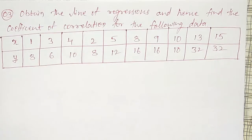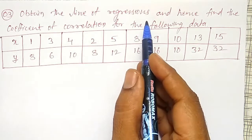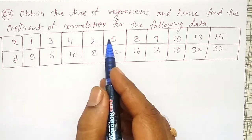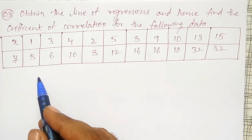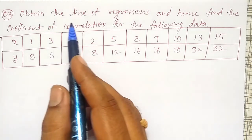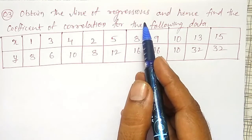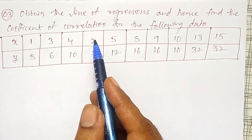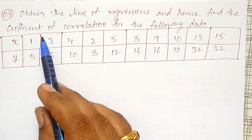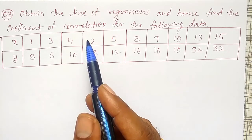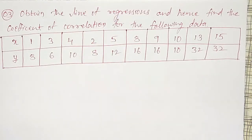In this video, I am going to obtain the line of regression and hence find the coefficient of correlation for the following data. First we have to find out the line of regression and then the coefficient of correlation. In the previous example we did first coefficient of correlation then line of regression, but in this, first I have to find out the line of regressions.